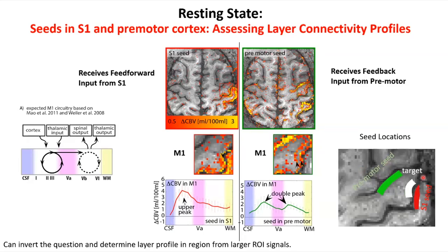You can invert the question: look at a layer in motor cortex and adjust your seed to either pre-motor areas or somatosensory areas. When you do that, the data seem to fall in with these simplified models — and I'm almost shocked, because it's working better than I expected.